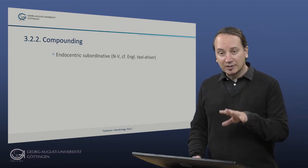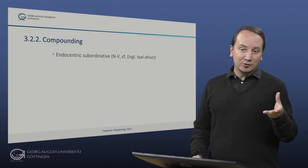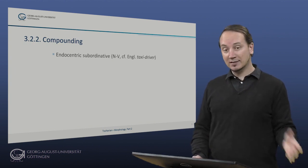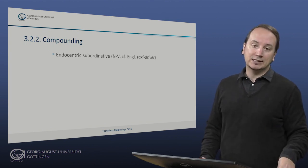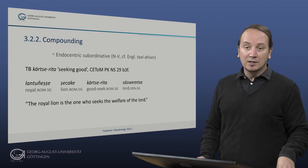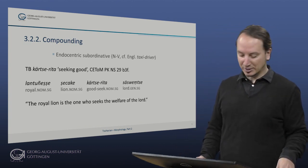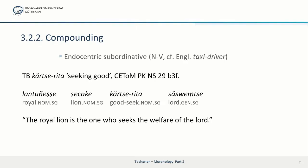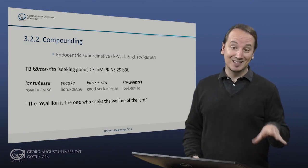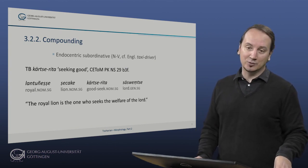Now we look at endocentric subordinative compounds. In compounds of the noun verbal derivative structure we find an argumental relation. Here the verbal head takes the nominal noun head as an argument, like in a transitive verb phrase. These are compounds like English taxi driver, and in Tocharian there are two types that are each attested in both languages, but we'll focus on Tocharian B here. So let's look first at Kürzerita in the passage taken from the Supriya Nataka, a Buddhist play about a king called Supriya. So the royal lion is the one who seeks the welfare of the lord, and we have Kürzerita here seeking welfare. The simplex of the noun head is Karze, and since we have Kürze it means that it is part of a compound with the stress having moved likely to the third syllable in accordance with our stress rule.